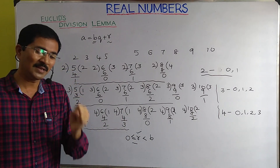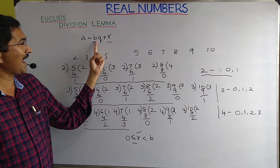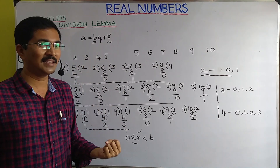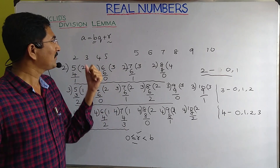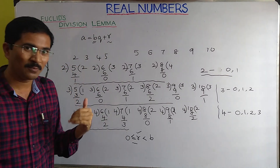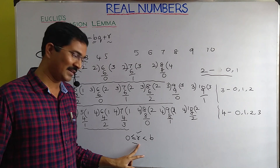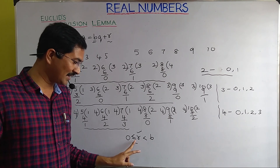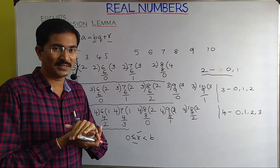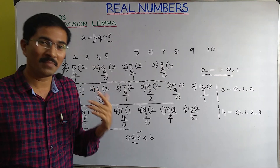Let us sum up the three aspects of Euclid's Division Lemma: First, for a given pair of positive integers A and B, Q and R are fixed — unique. Second, they must satisfy the equation A = BQ + R. Third, R must be greater than or equal to 0 and less than B. Together these make up Euclid's Division Lemma.